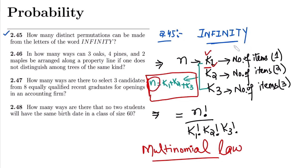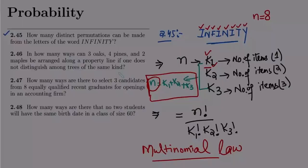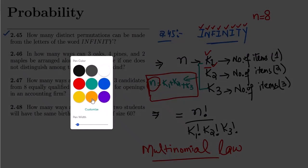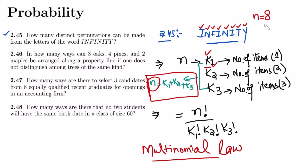We have the word 'infinity,' composed of some letters. How many letters are there? Counting: 1, 2, 3, 4, 5, 6, 7, 8 — so the total number of letters is n equal to 8. Now let me identify the different k's. If k1 corresponds to the letter 'i,' how many 'i's do we have? We have i at positions 1, 2, and 3, so k1 equals 3.